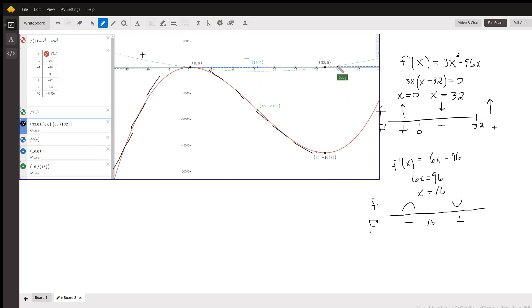And of course, to the right of 32, we're back above the x-axis. So tangent lines are positive in slope, going uphill.